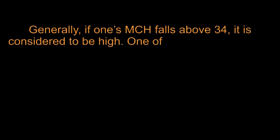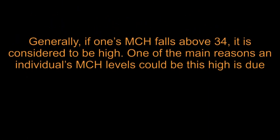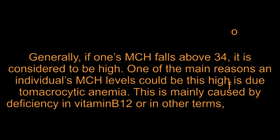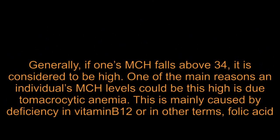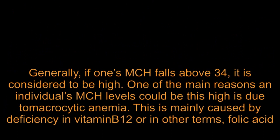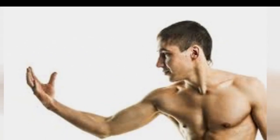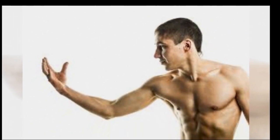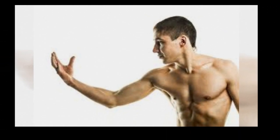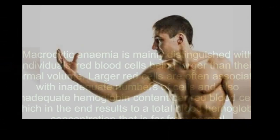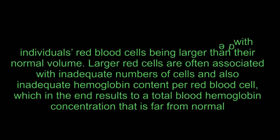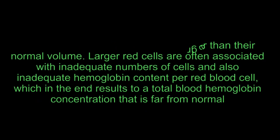Generally, if one's MCH falls above 34 it is considered to be high. One of the main reasons an individual's MCH levels could be this high is due to macrocytic anemia. This is mainly caused by deficiency in vitamin B12 or folic acid. This vitamin is required by the body in very minimal amounts to facilitate vital chemical processes. Macrocytic anemia is mainly distinguished by individuals having red blood cells that are larger than their normal volume.